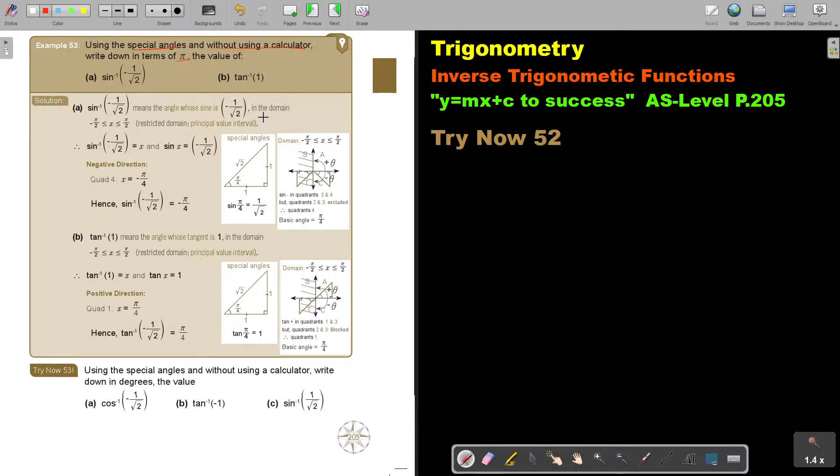So this means the angle whose sine is this. I'm looking for that angle in the domain. Don't forget. The domain is now, it was negative 90 to 90. Now it's negative pi over 2 to pi over 2, because 90 is pi over 2. Restricted for sine.